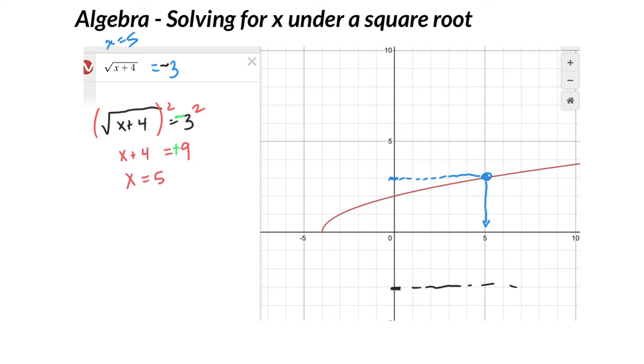Be careful. We call that the extraneous solution, where squaring, the act of just squaring and losing that negative basically leads me to an incorrect answer. So sometimes you want to maybe think about the graph a little bit before you solve.